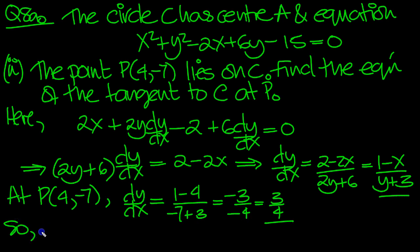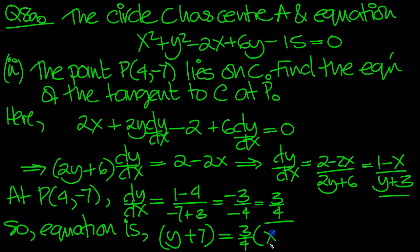So the equation of the tangent is y minus the y value plus 7 equals 3/4, the gradient, times x minus the x value of P, 4.